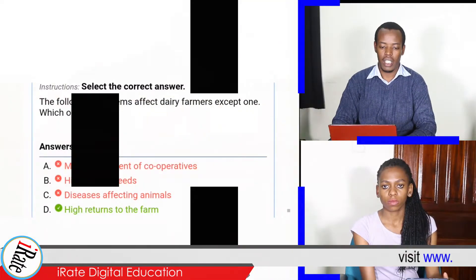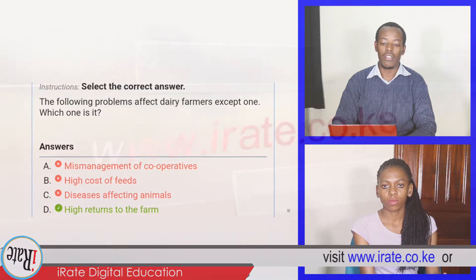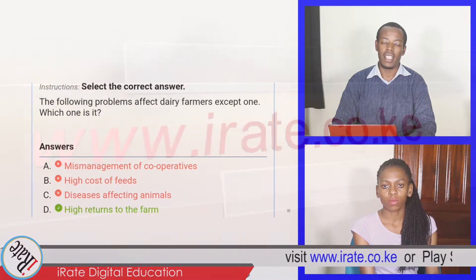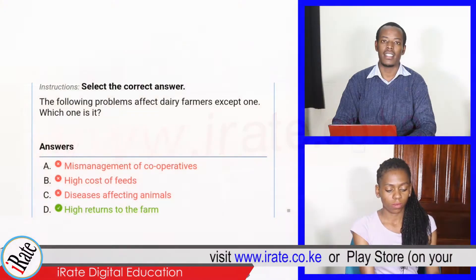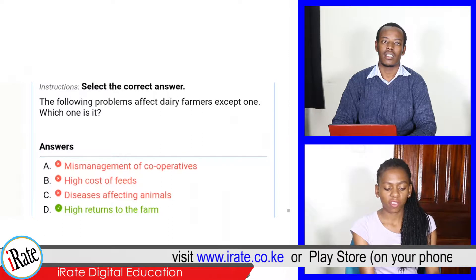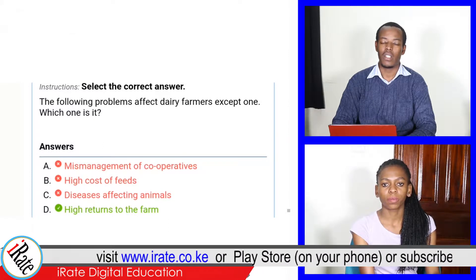Select the correct answer. The following problems affect dairy farmers except one. Which one is it? High returns to the farm. That is correct.